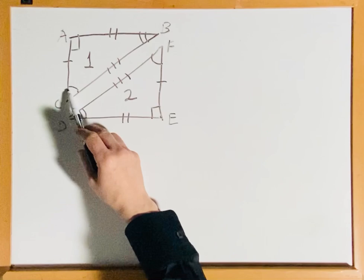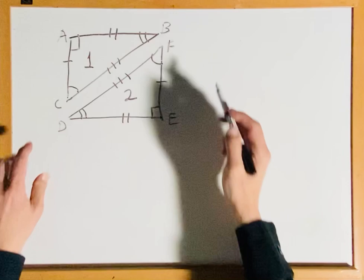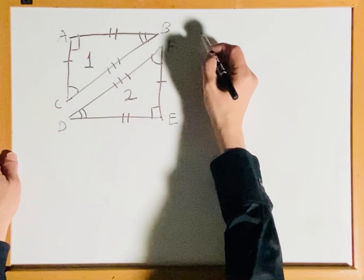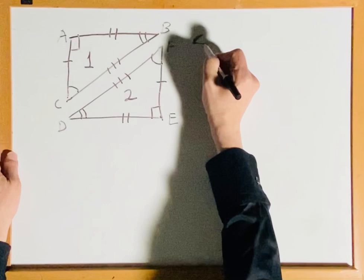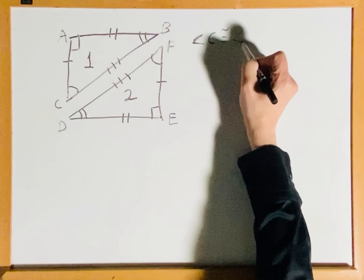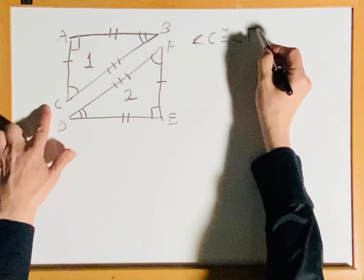That means angle F is going to be corresponding or congruent to angle C. So angle C is going to be congruent to angle F.